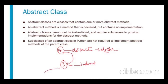We cannot directly create an object for the abstract class. We have to create an object for the subclass which is extended from the abstract class. The use of abstract classes: if we know the requirement but don't know the design part, we create abstract classes. When we know what to implement but not how, we create an abstract class with abstract methods.